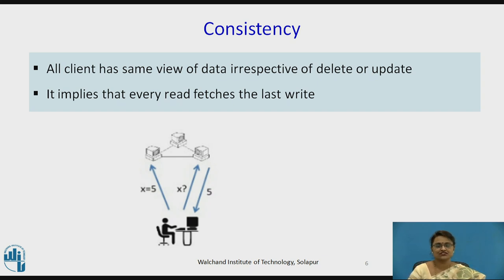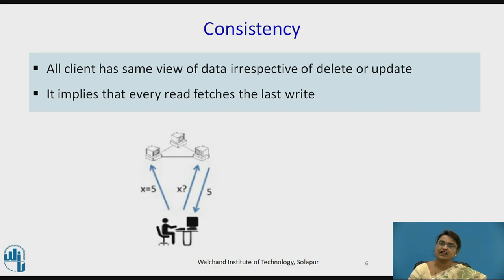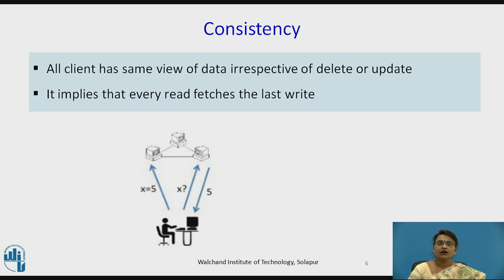The first one is Consistency. Whenever anyone is requesting data, that data should be available in the same view to everyone, even if simultaneously everyone is asking. The same view of data, irrespective of any update or deletion, should be available. No inconsistent data should be present in the network when a request comes in. It implies that every read fetches the last write — whatever the last write is, that should be given to every subsequent read.